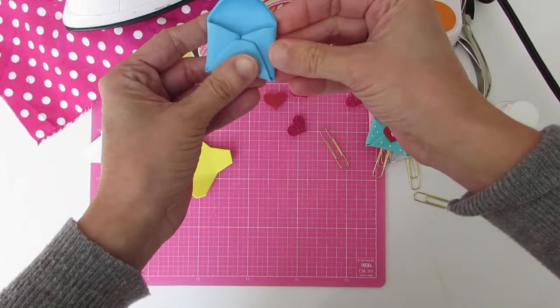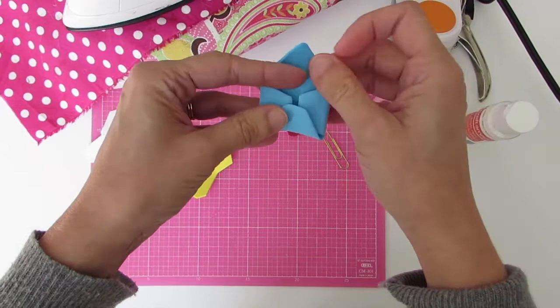To secure the envelope just put dabs of hot glue on the inside and close off all the flaps. Wait a few seconds for it to dry.